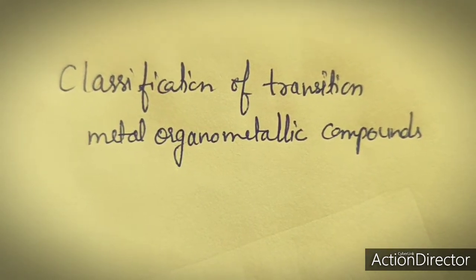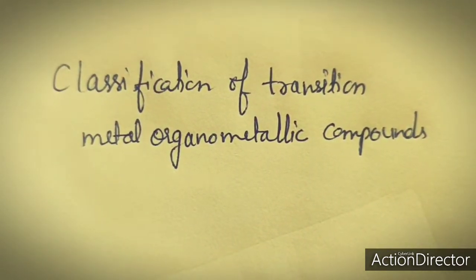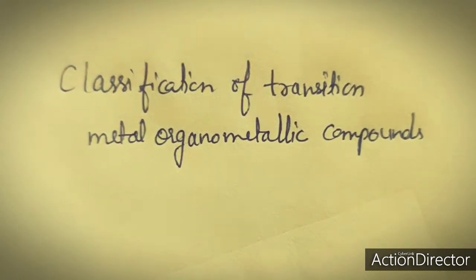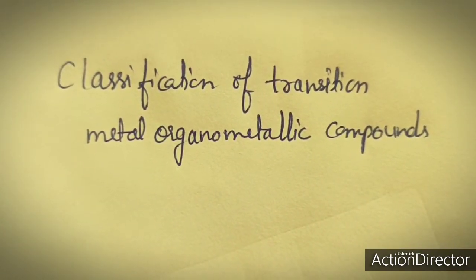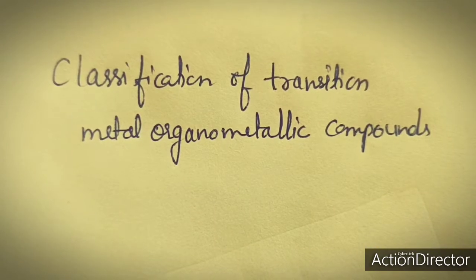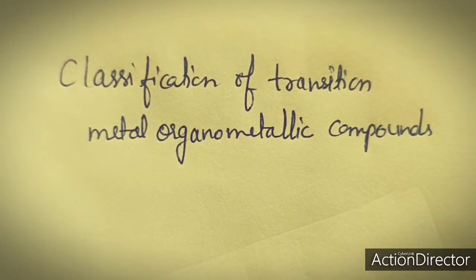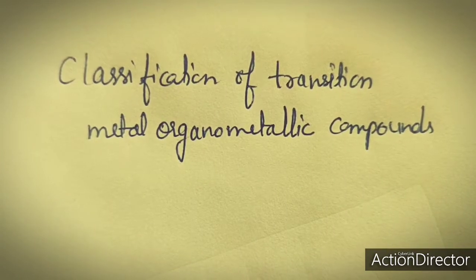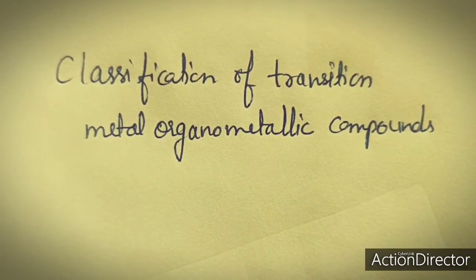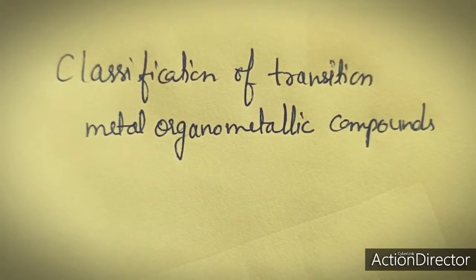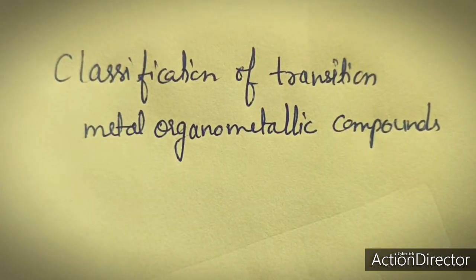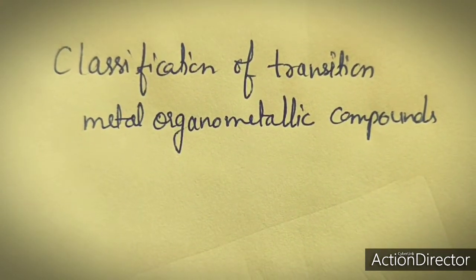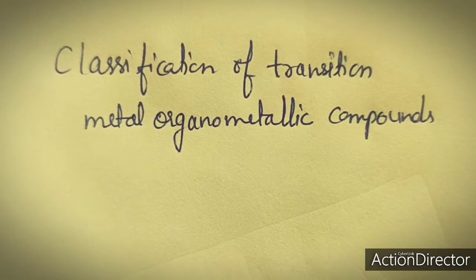Transition metal organometallic compounds can be classified on the basis of the 18 valence electron system and on the basis of ligand type. So two types of classifications are there: one is on the basis of 18 valence electrons, and the second one is on the basis of ligand type.